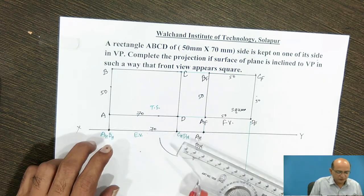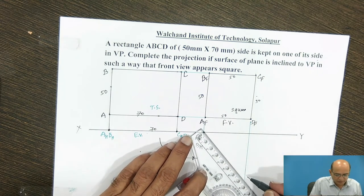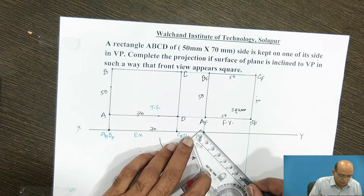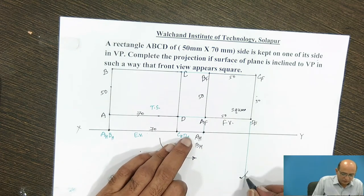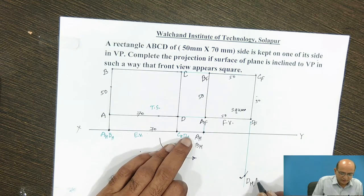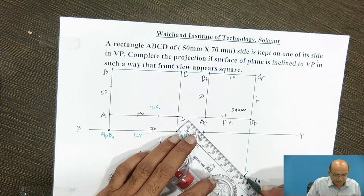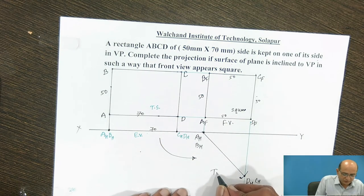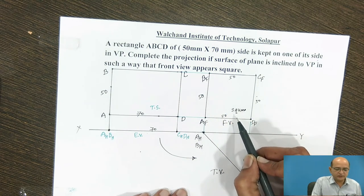This 70 mm is the edge view of the plane, so that 70 mm distance is marked on this side. At 70 mm distance we get the positions of DH and CH, and when we complete the line connecting these two points, this is the top view of the plane when the rectangular plane shows the front view as a square.